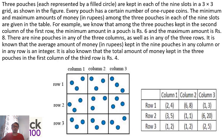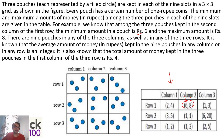Looking at solving: three pouches, each represented by a filled circle, are kept in each of the nine slots of a three-by-three grid, as shown in the figure. Every pouch has a certain number of one-rupee coins. The minimum and maximum amount among the three pouches in each slot are given in a table. For example, among the three pouches in the second column, first row, the minimum is six rupees and the maximum is eight rupees. There are nine pouches in any three columns or three rows. The average amount of money in the nine pouches in any column or row is an integer.